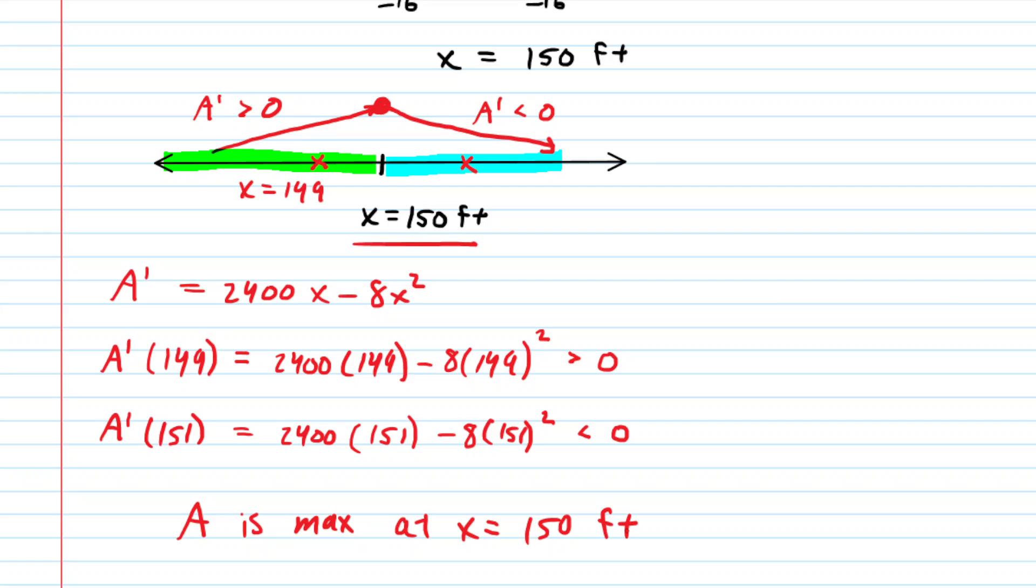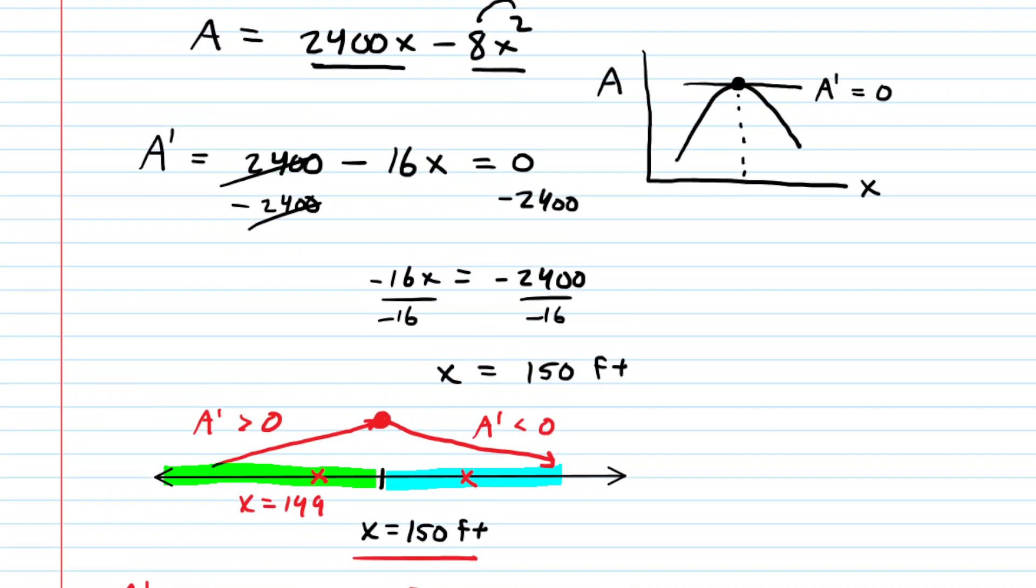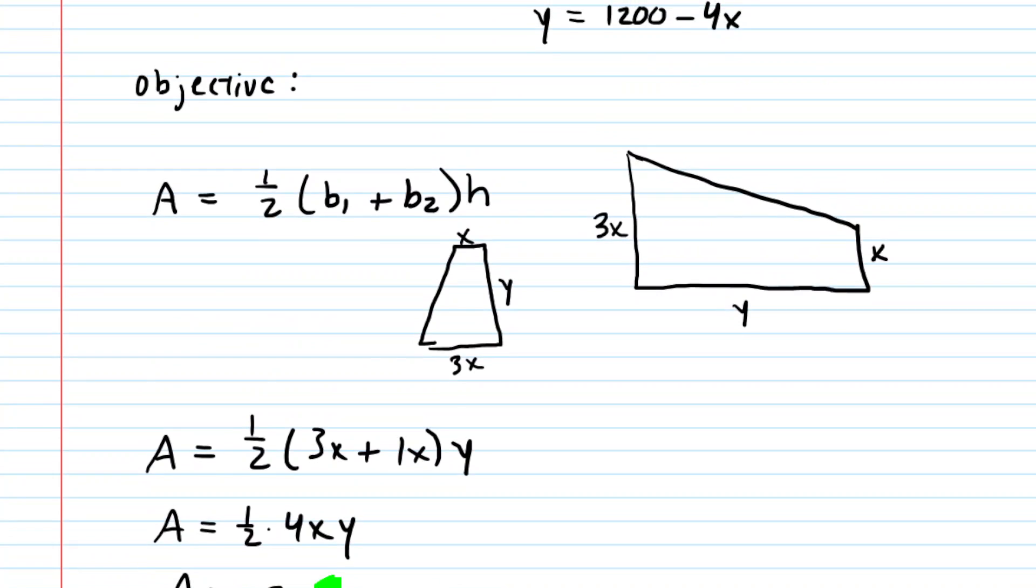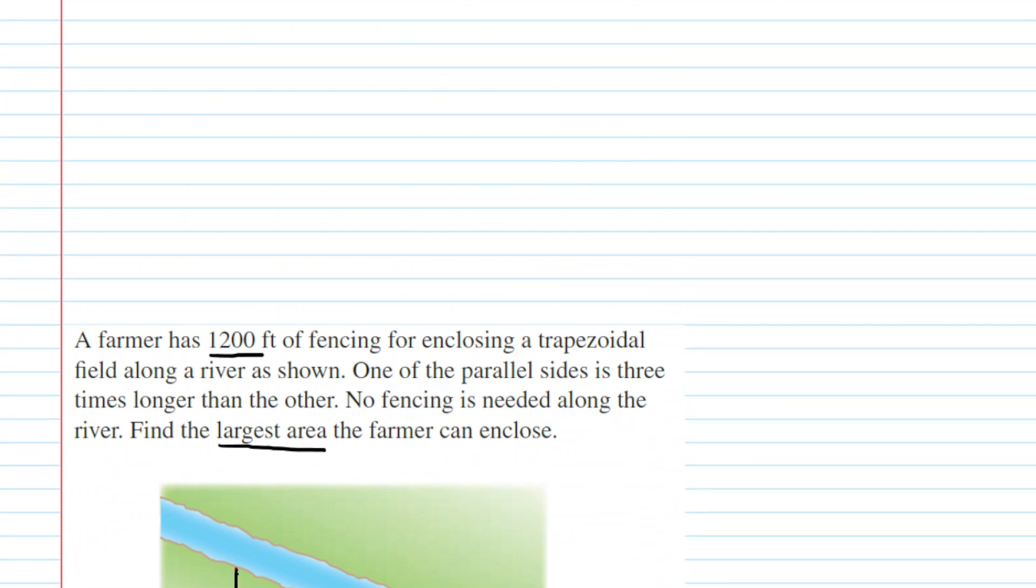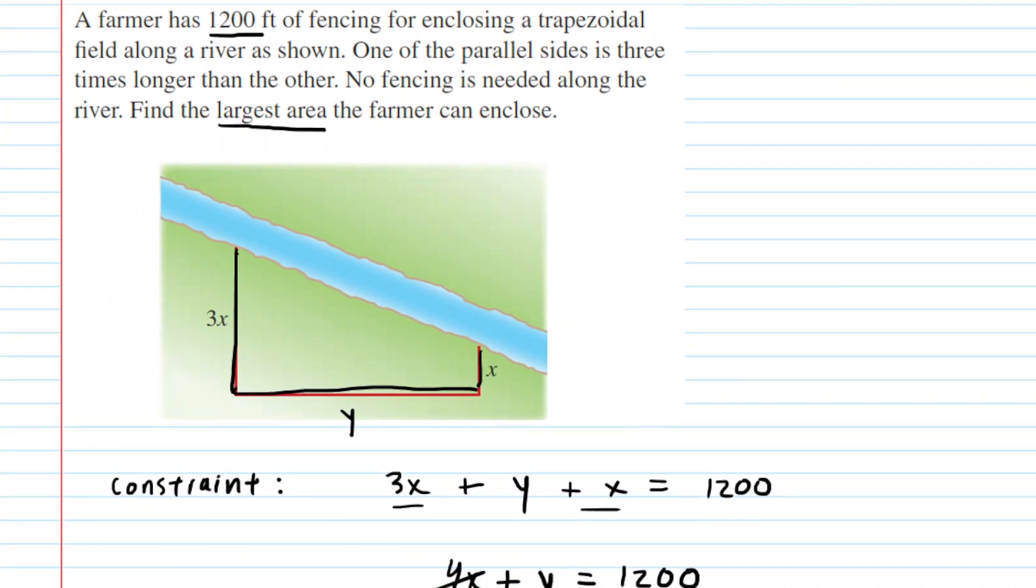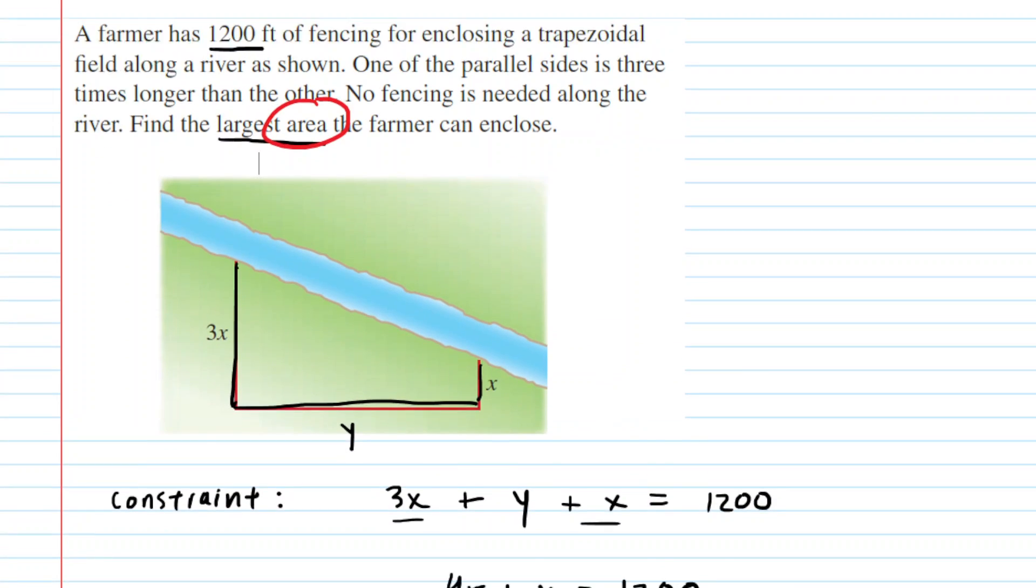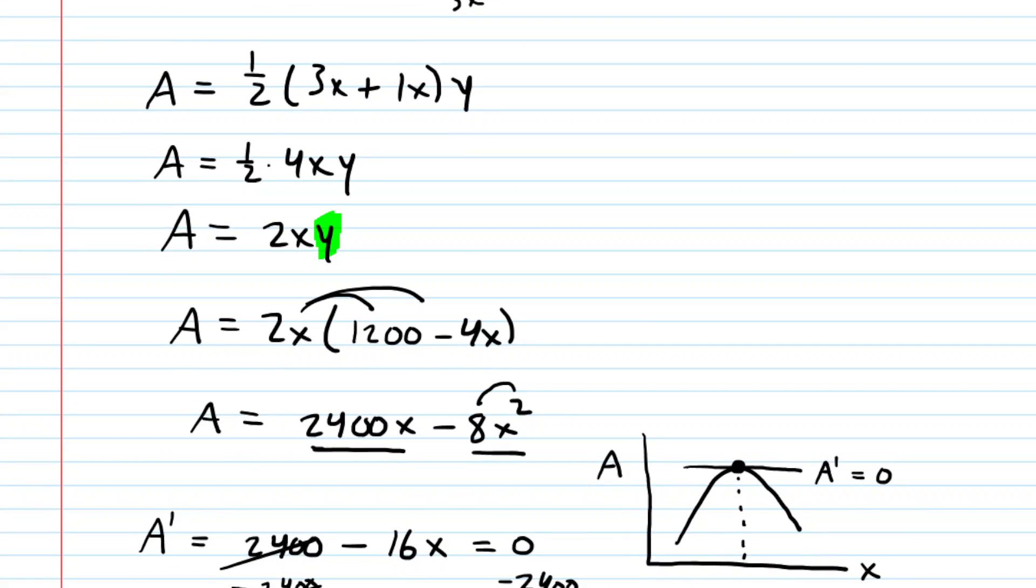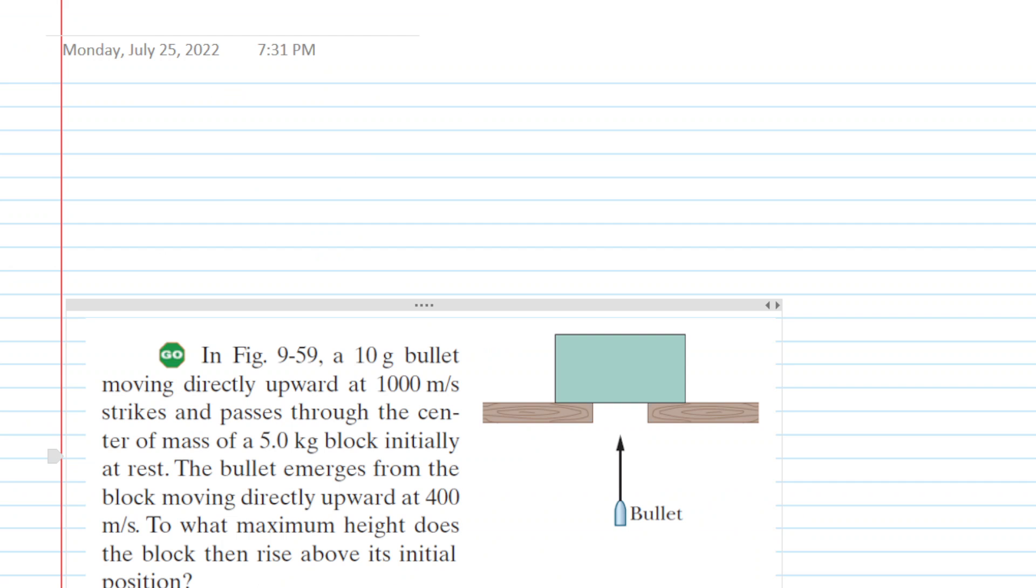The last thing we do in optimization is just make sure we've actually answered the question. Maybe it wanted the x value, maybe it actually wanted the area. So we go all the way back to the question. And the question said to find the largest area that the farmer can enclose. So we're not quite done. We just need to go back and calculate the area. And that's not going to be too bad because, remember, we had an area equation right here. This is our area in terms of x.